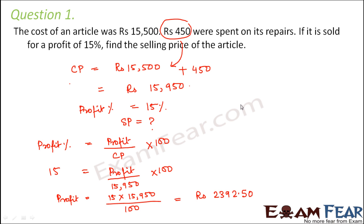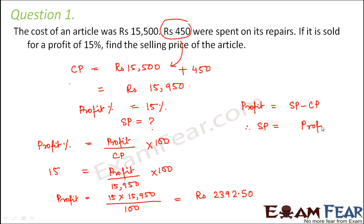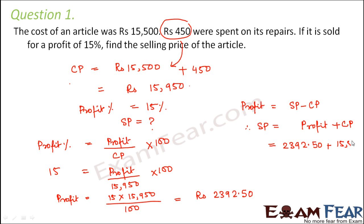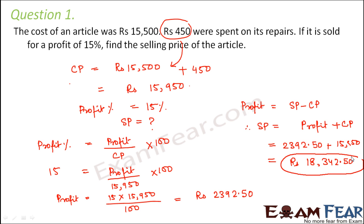Now we have to calculate the selling price. Selling price equals profit plus cost price. So this is equal to Rs 2,392.50 plus Rs 15,950. Therefore the net selling price would be Rs 18,342.50. This is the selling price of the article.